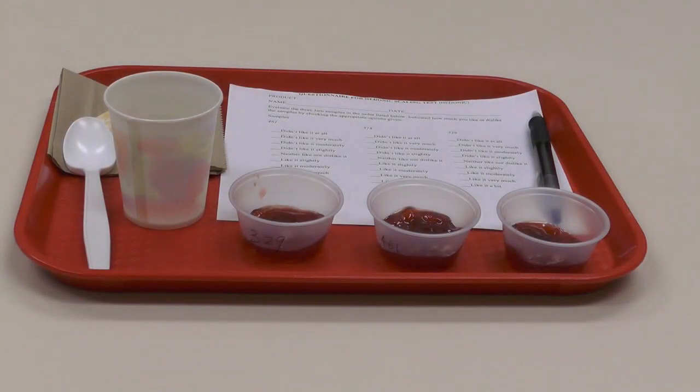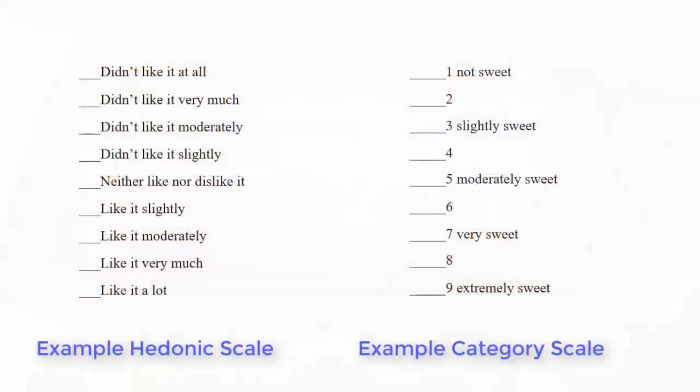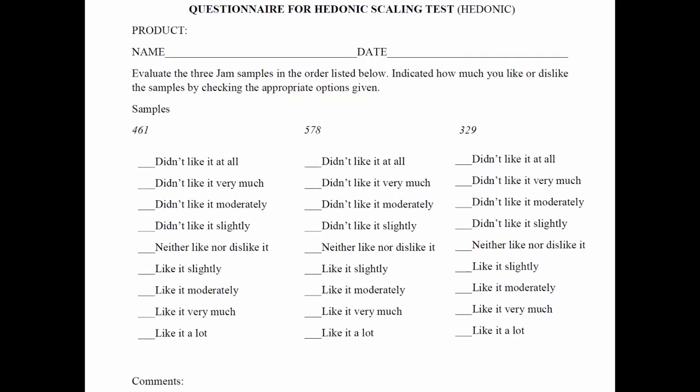The hedonic scaling test is typically used to measure the degree of liking of a sample by consumers. This scale is very similar to the category scale, as it includes a series of statements which allows the panelists to express a varying degree of preference for the sample. The scale can be converted numerically and subsequently analyzed through statistical analysis. Here is an example of the questionnaire. The samples are in random three-digit codes and presented in randomized order to the panelists.